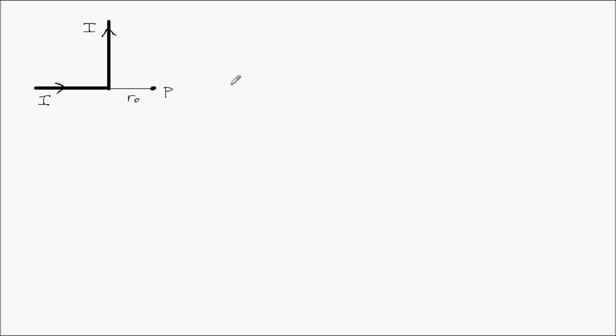In the 2013 E&M practice test multiple choice, it asked what was the magnetic field due to half of a wire at point p, a distance r naught. So that's what we're going to try to figure out today.